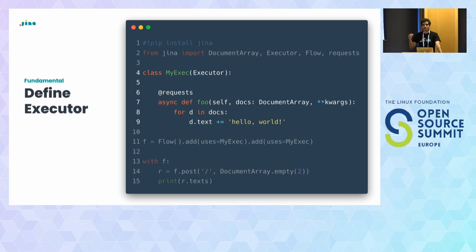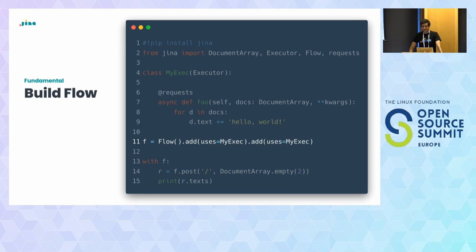Then you define the actual logic by creating a method, decorating it with @requests to tell the executor what to serve, and adding your logic. Here the logic is simple: take a document as input and add text to the text tag. With this, you have not only a class but a microservice that can run in the cloud. Now that you have your microservice, you put them together into a consistent application — the Flow. With this syntax you can chain two executors, creating a graph.